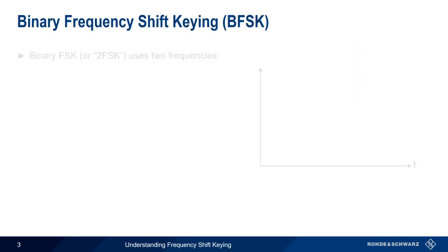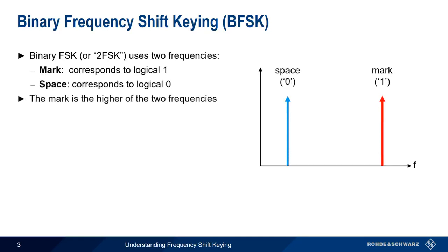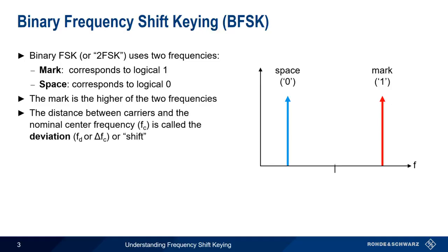Binary FSK, or 2FSK, uses two frequencies: the mark, which corresponds to a logical one, and the space, which corresponds to a logical zero. By convention, the mark is always the higher of the two frequencies. The distance between these two carriers and the nominal center frequency is called the deviation, either F sub D or delta F sub C. This is also called shift, which is where frequency shift keying gets its name.